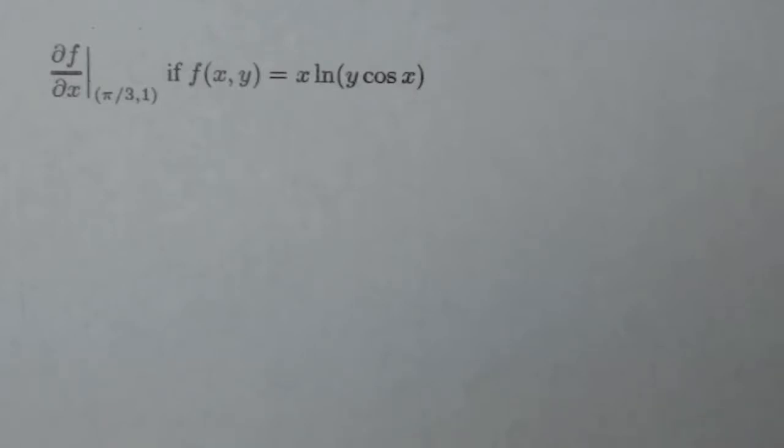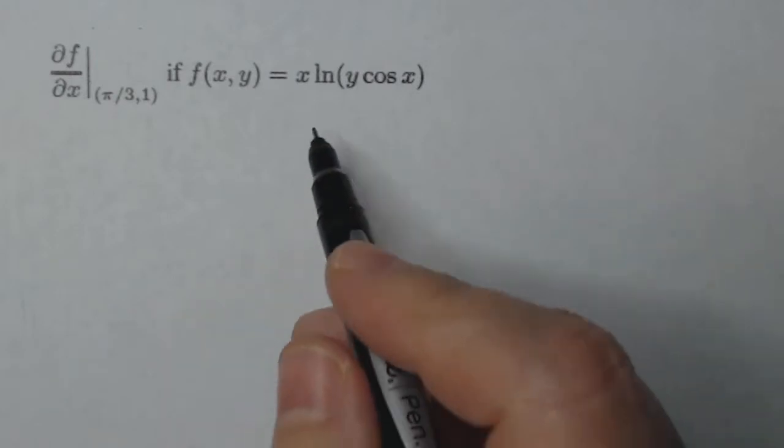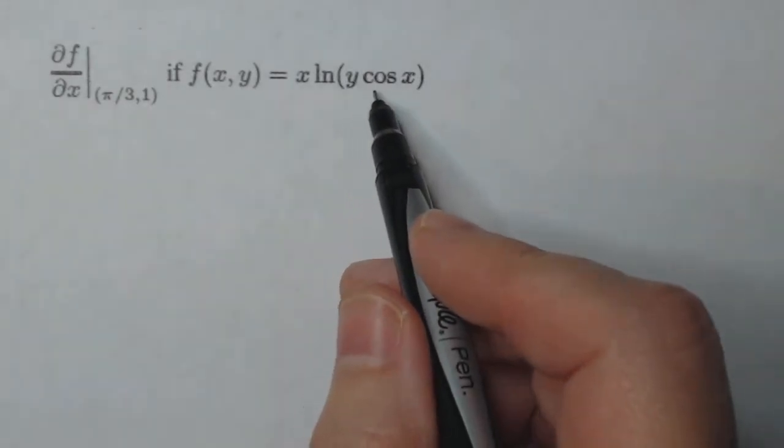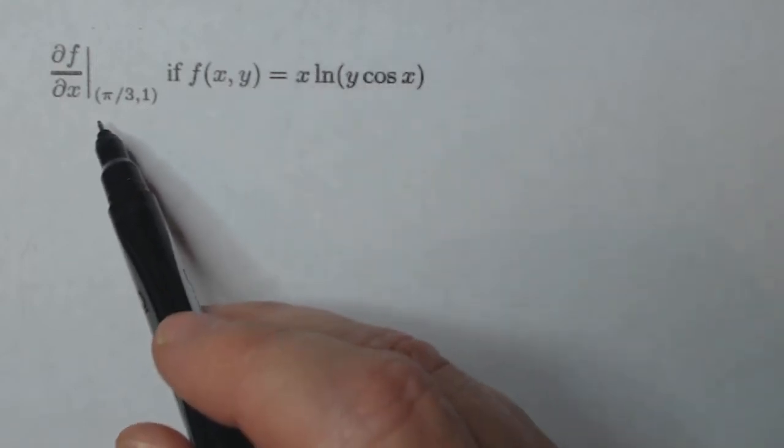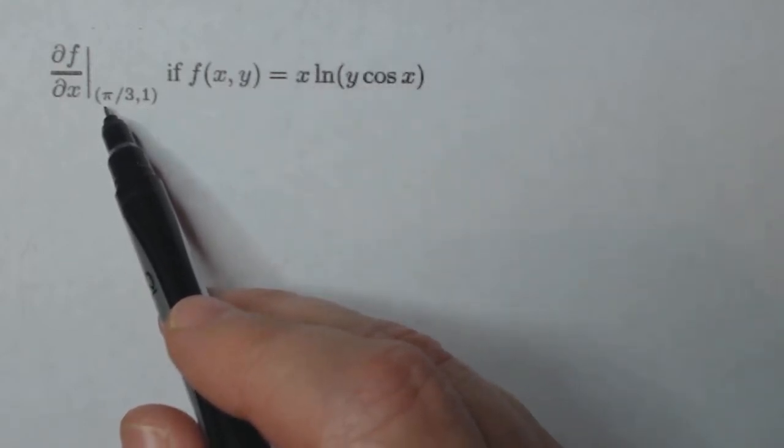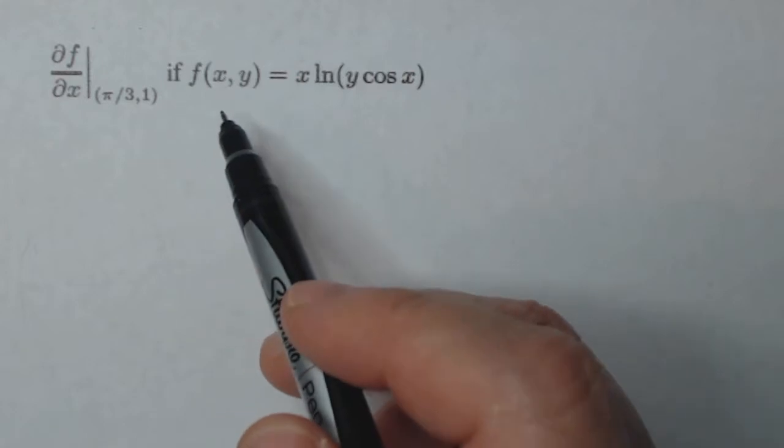This is a Calculus 3 problem regarding partial derivative of this unusual function here, and then some mathematics there to calculate the derivative at a certain point. So our function is x natural log of quantity y cosine x, and then we're supposed to input the ordered pair pi over 3 comma 1 once we're done with the derivative.